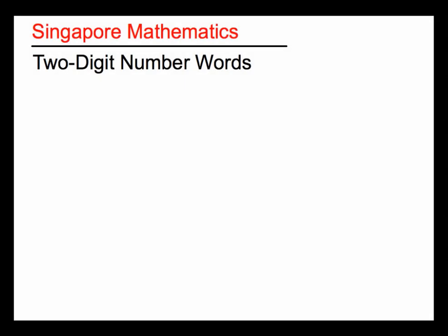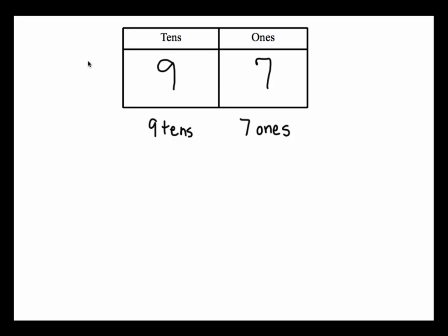Hi scholars, welcome to another video with Math with Mr. Almeida on two-digit number words. In the previous lesson, we learned how to look at two-digit numbers and write them in terms of tens and ones. According to our place value chart, the place to the right is called the ones place, and the place to the left tells us how many tens we have. This number right here has nine tens and seven ones — that's 97. You can think of this as nine bundles of ten, and a ten is a group of ten ones.